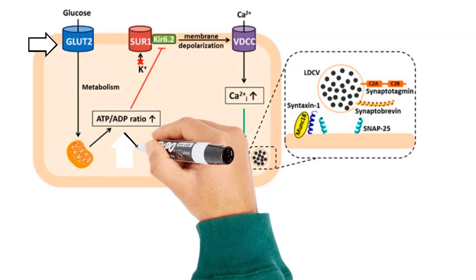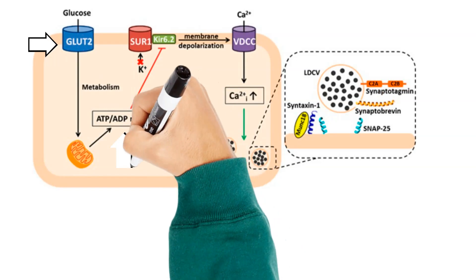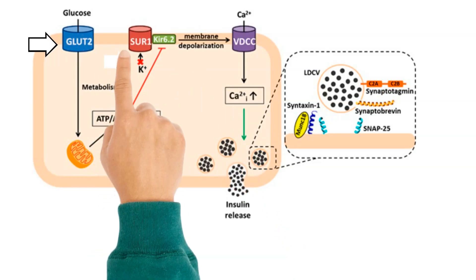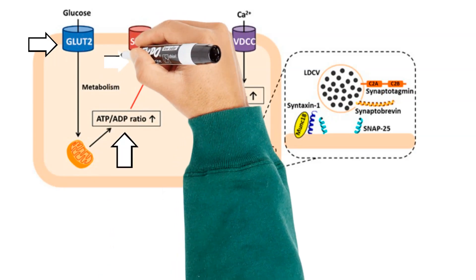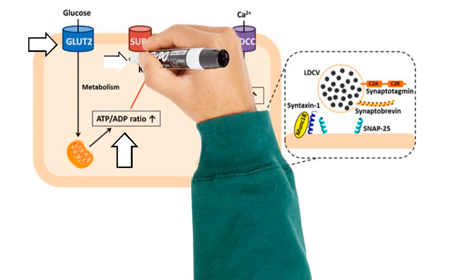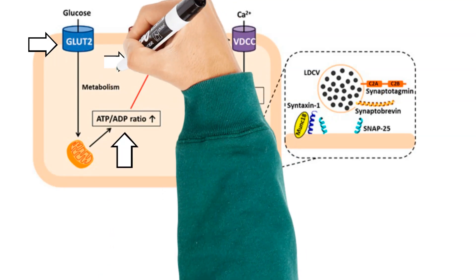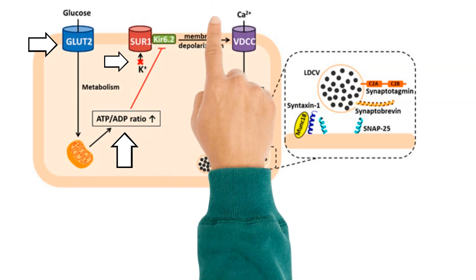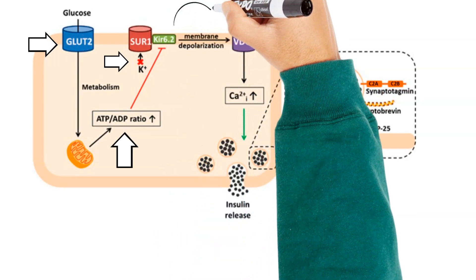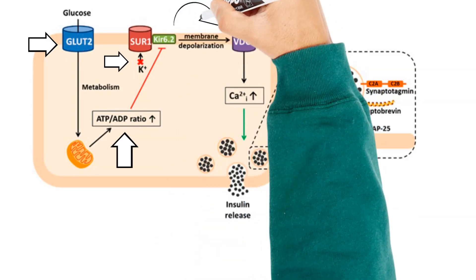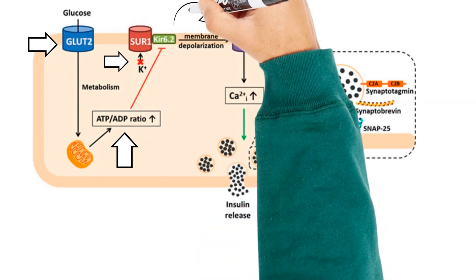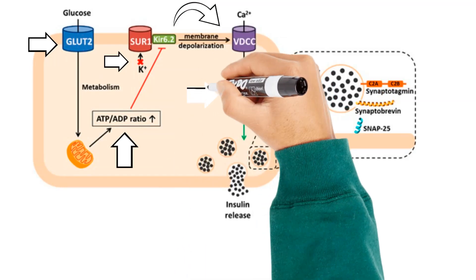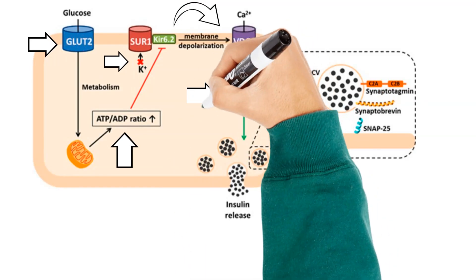This leads to the closure of ATP-sensitive potassium channels that are open under non-stimulated conditions to maintain the resting membrane potential. Upon closure of these channels, the decreased outward potassium current and the opening of voltage-dependent calcium channels elicit depolarization of the membrane.